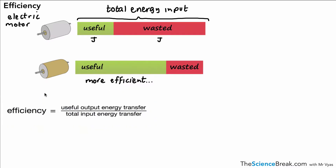We can look at our equations for calculating efficiency. The first one is: useful output energy transfer divided by total input energy transfer — basically useful over total. We get an answer as a decimal, but if we want a percentage we can multiply by 100. Remember that both of those energies are measured in joules.